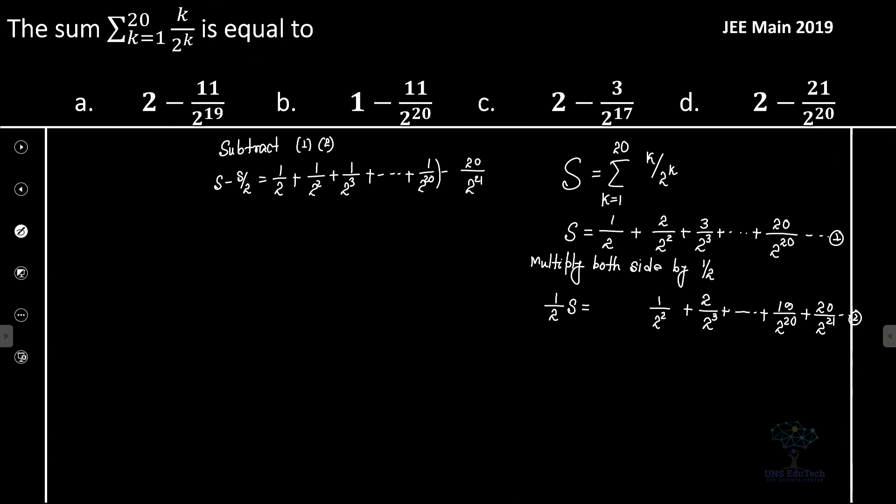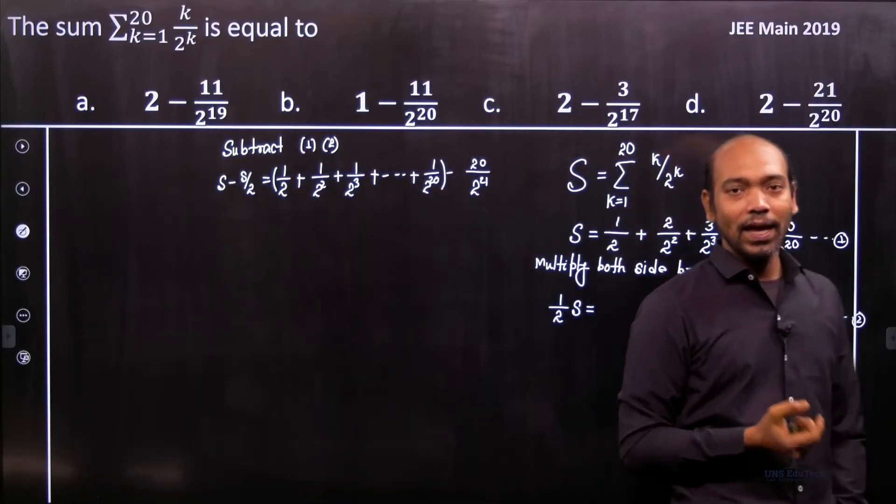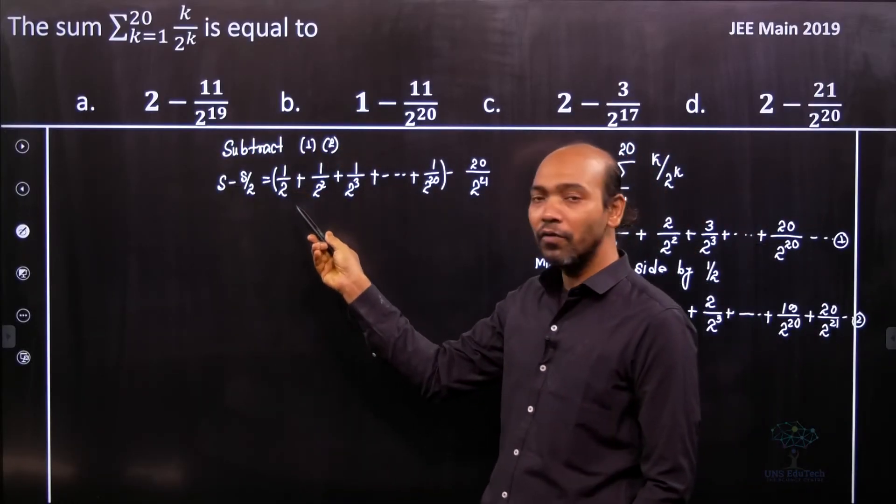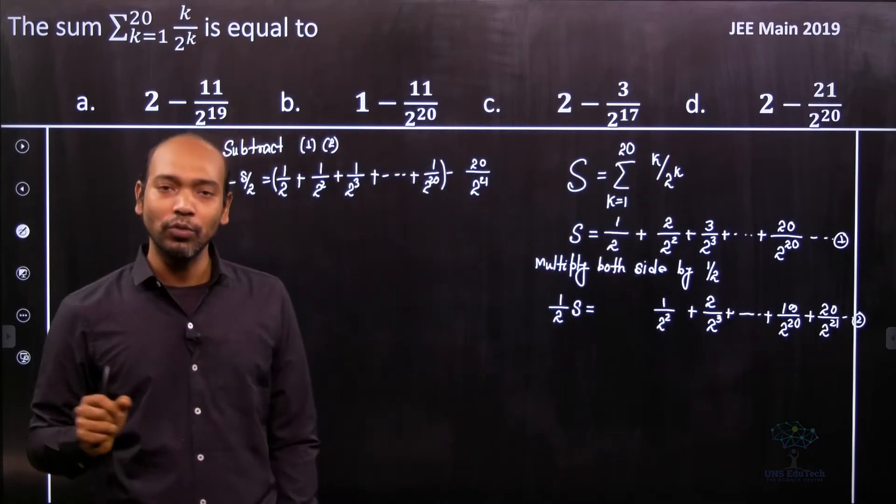So you see that whatever I put in a bracket that actually gives you a GP series. A GP series with first term half and common ratio is obviously half. So that's why we can easily add them together.